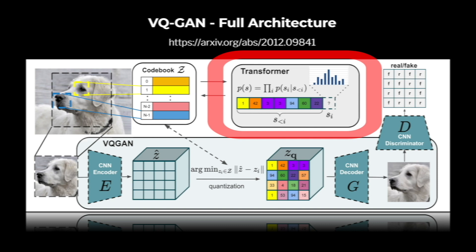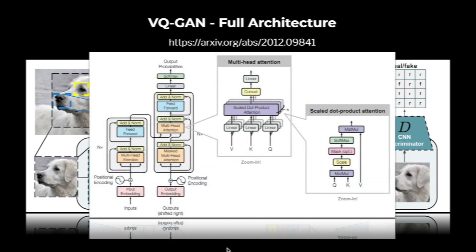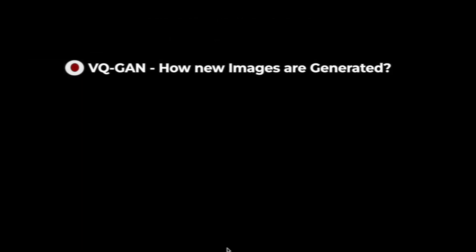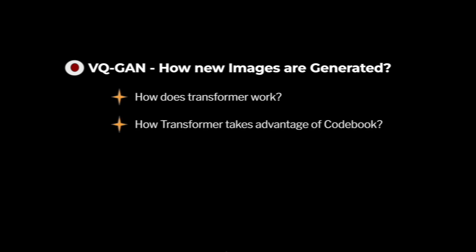However, looking at the full VQGAN architecture, the most important part is the transformer, and the transformer is the key for generating new images. With the help of the transformer we can select certain features from the codebook and use those features in the decoder to generate new images. To understand this new image generation process in VQGAN, we need to answer: how does the transformer work? How does the transformer take advantage of the codebook? And what is the role of the transformer in VQGAN?